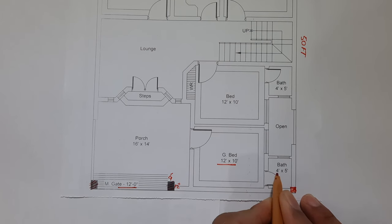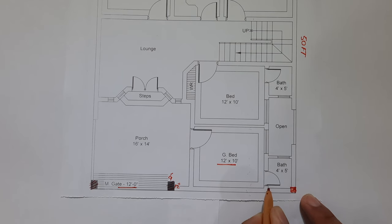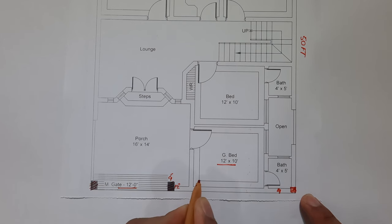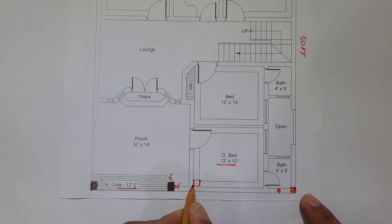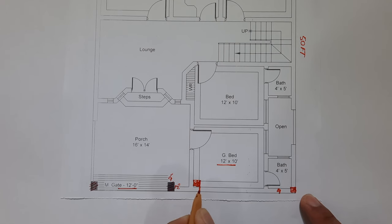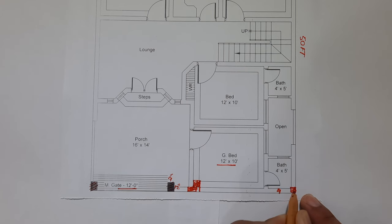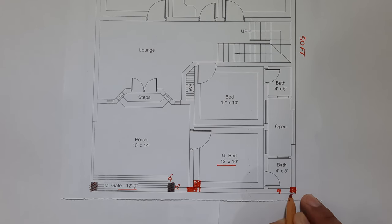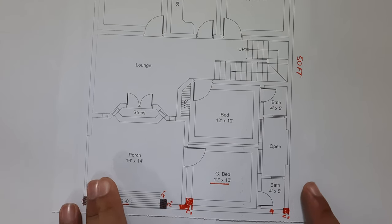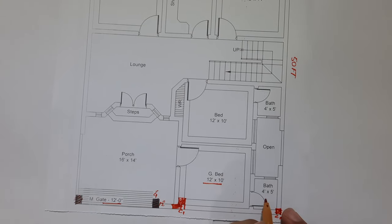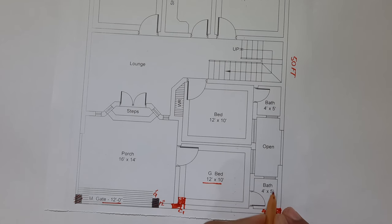The bath is only 4 feet wide, so we don't need to provide a column at that place — 4 feet is too short. The next column should be placed at the corner of this bedroom. So there are two columns here: this is the first column and this is the second column — call it C1.